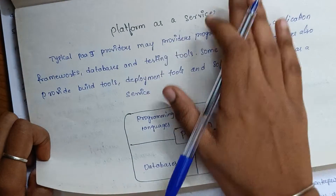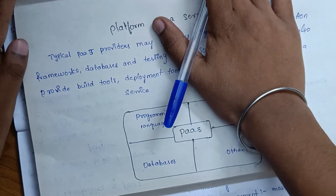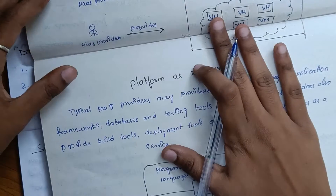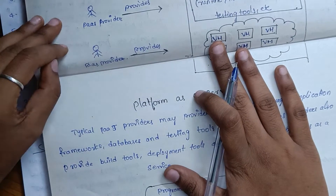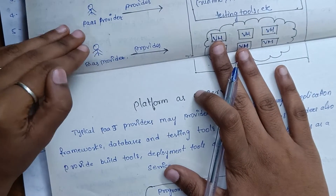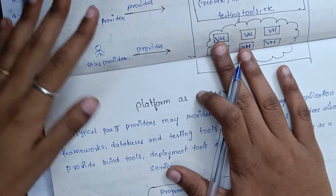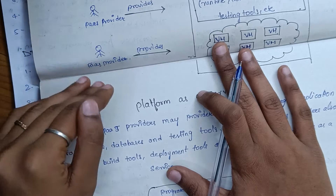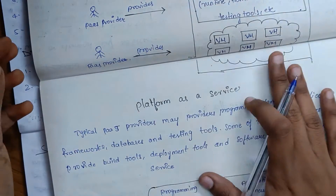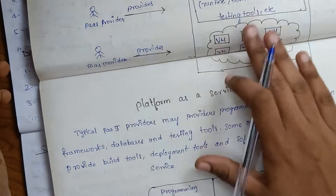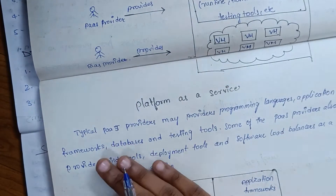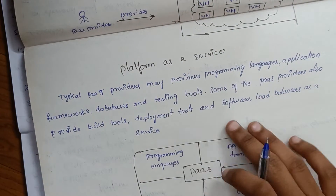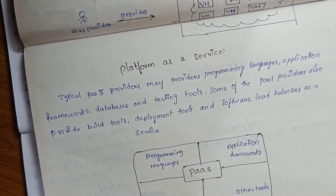This is the overall platform as a service model. This is the information of the platform as a service — the development of this project. The information is created by the Universal Group. You can use them on the platform as a service.